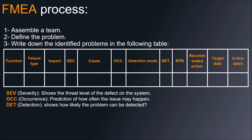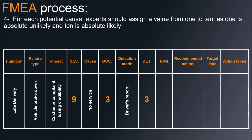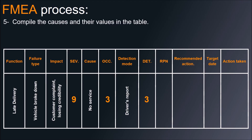Severity shows the level of threat of the defect on the system. Occurrence is the prediction of how often the issue may happen. Detection is how likely the problem can be detected. For each potential cause, experts should assign a value from 1 to 10, where 1 is absolutely unlikely and 10 is absolutely likely. Compile the causes and their values in the table.